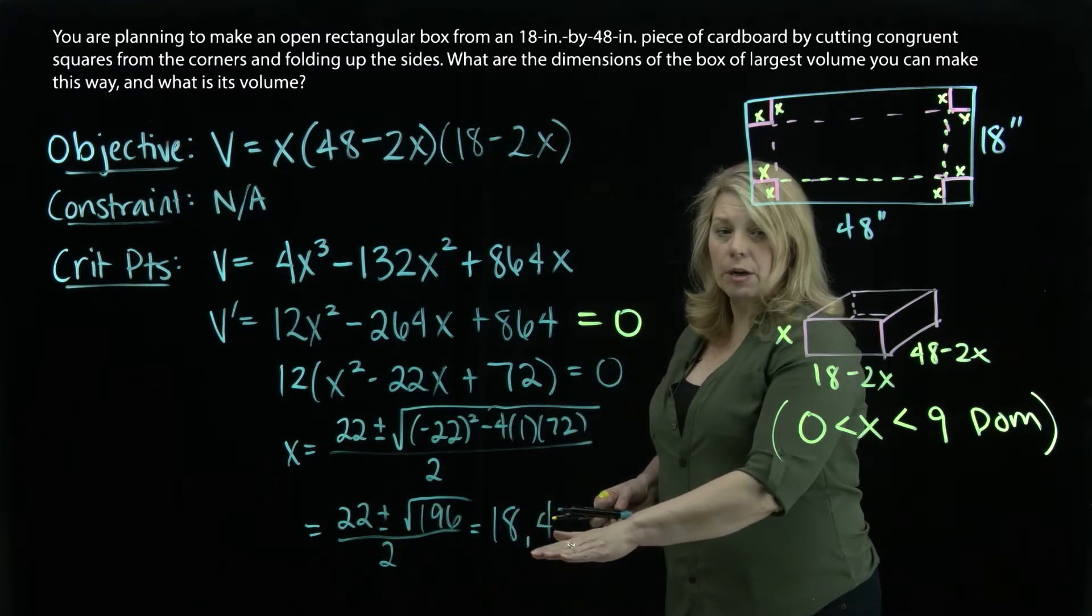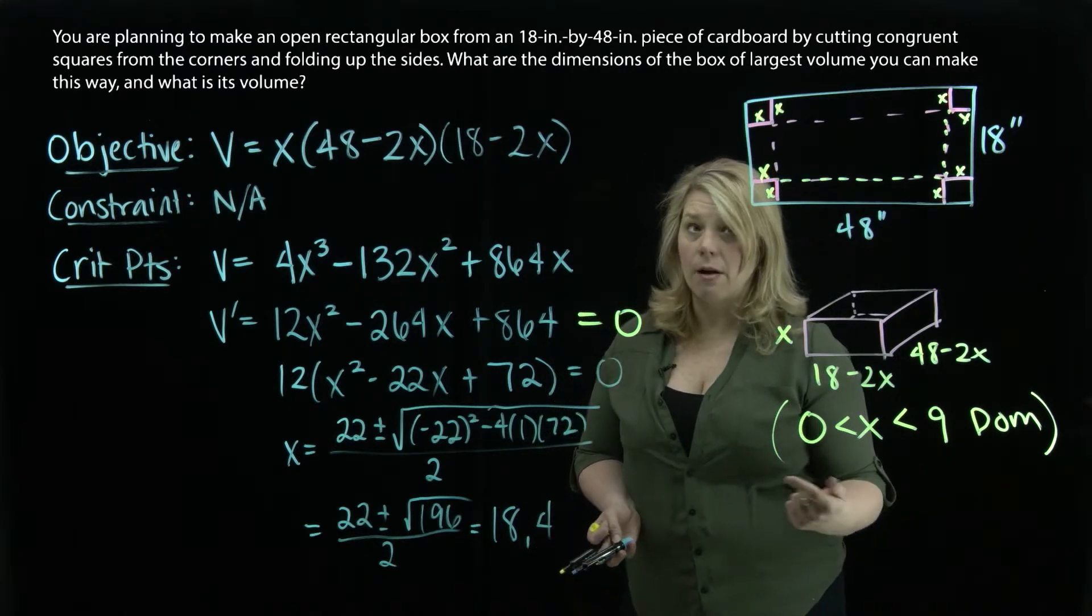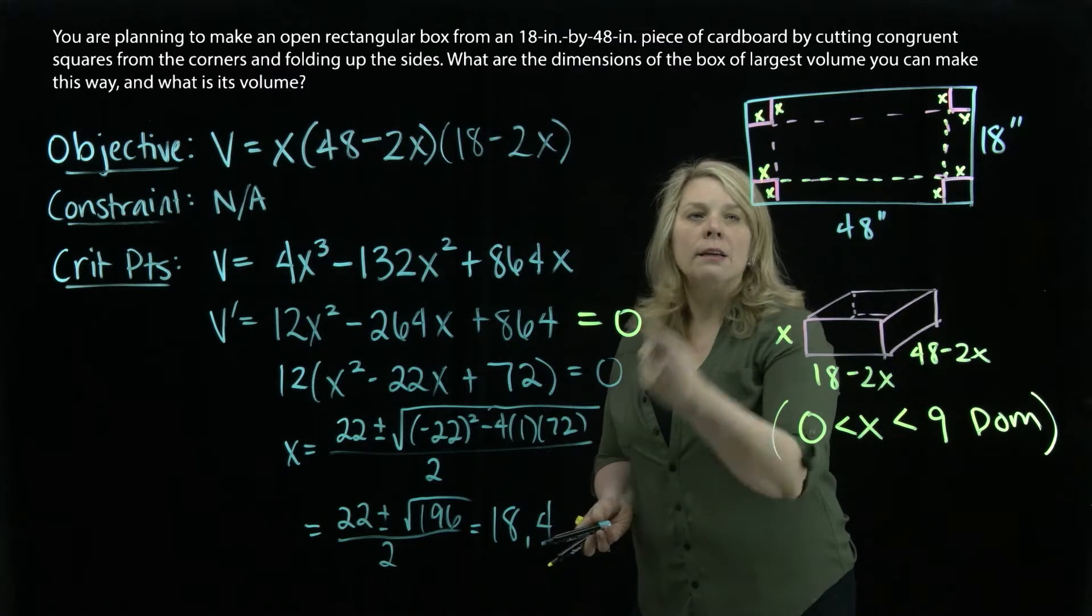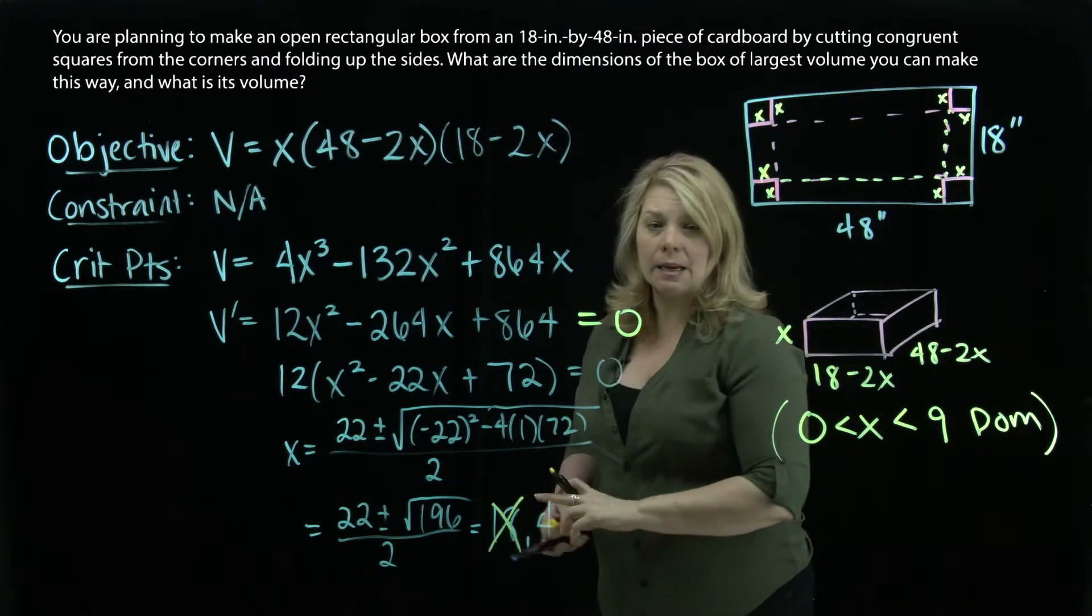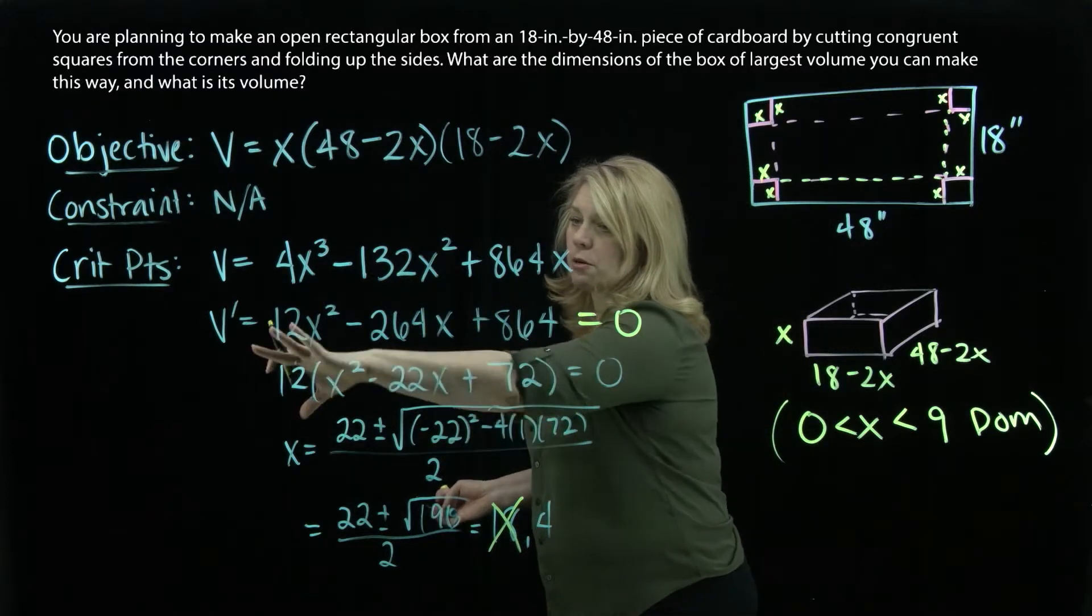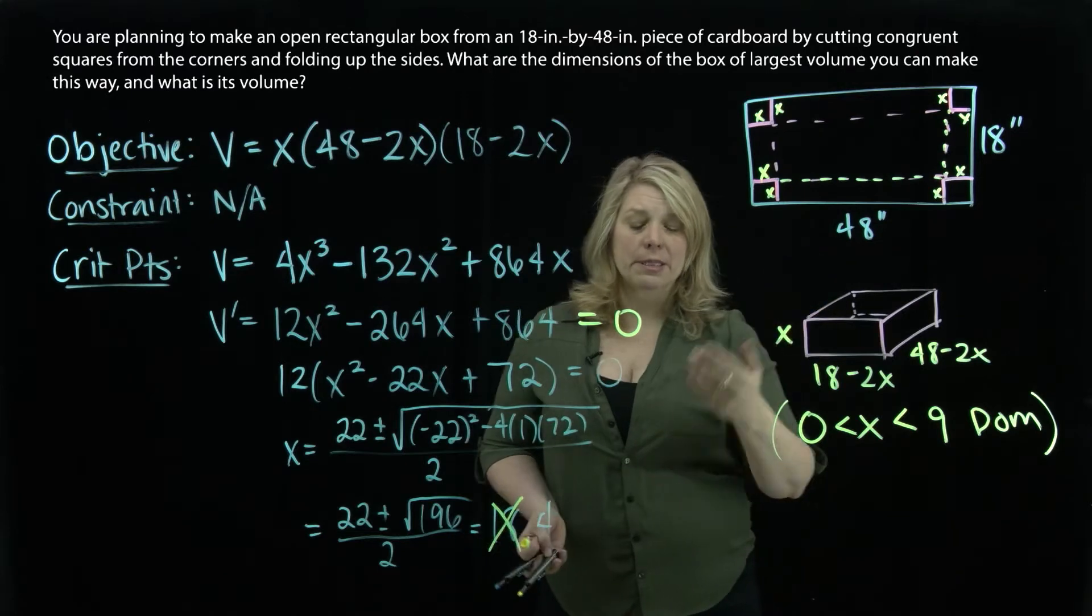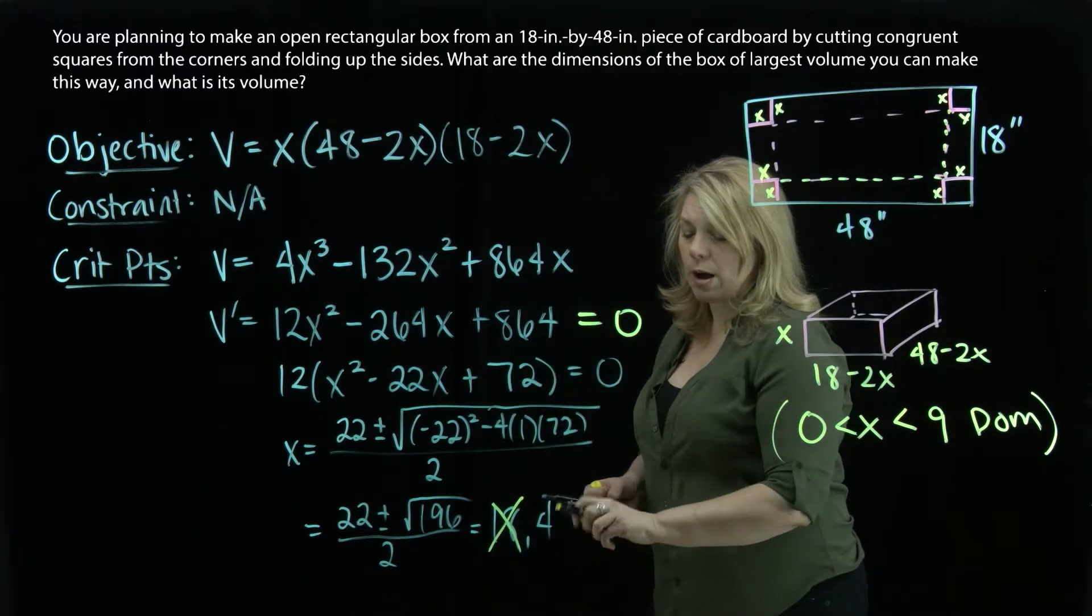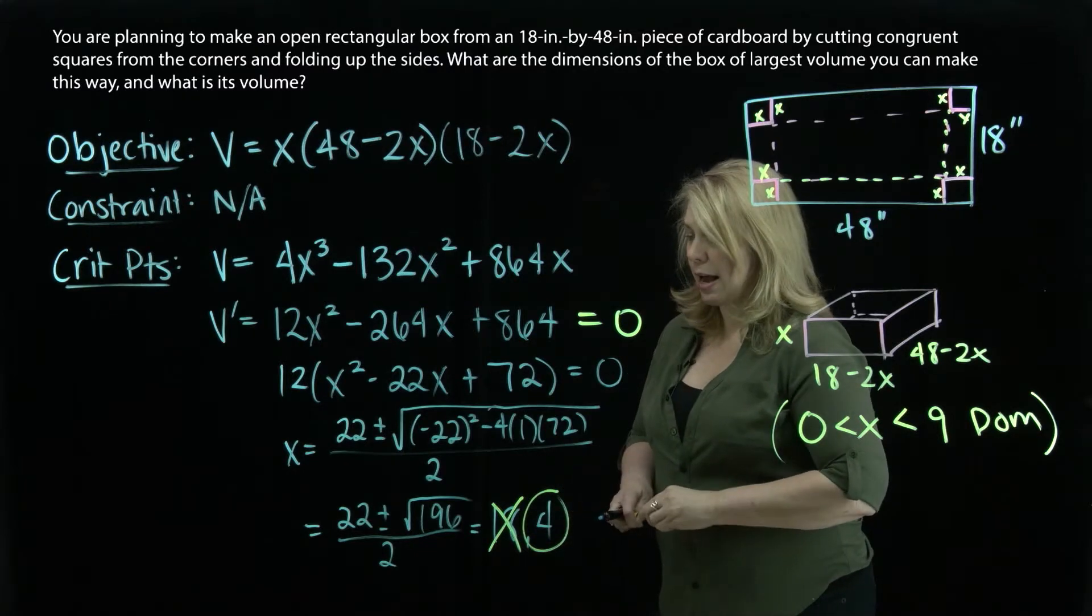So those are my critical points. This is where that feasible domain is important to think about. That 18 doesn't actually work in the statement of the problem. So that one is not in the feasible domain. It is a solution. It's a critical point of this equation. But it's not actually going to work in our optimization problem. So I actually only have one critical point that's in the feasible domain here. So this is our x value.